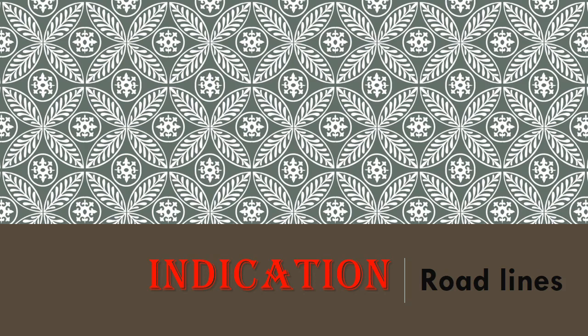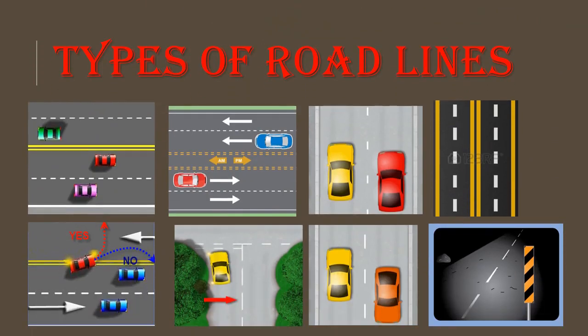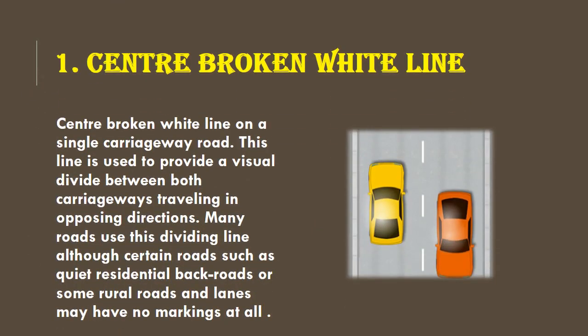These are the road lines that we are going to see today. First is the center broken white line. This line means that we can overtake the car safely. We can cross the car safely. These are small highways and small roads, generally. This means that there is two-way traffic. These have more gaps and the lines are small.